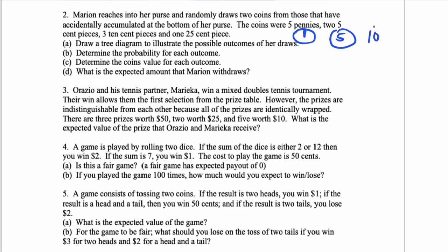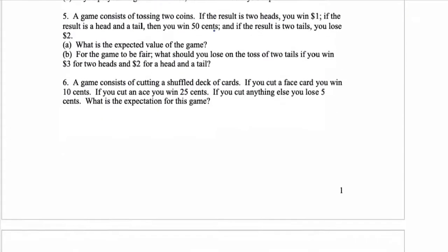There's two five-cent pieces, three ten-cent pieces, and one twenty-five-cent piece. There's only one of those, so that's important because we're picking two coins out of the total. We're going to make a tree diagram and determine the probabilities and how much the coin's value is worth, and then the expected value, so the average amount of money that she pulls out of her purse.